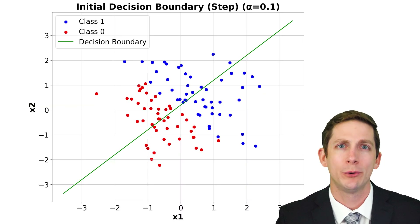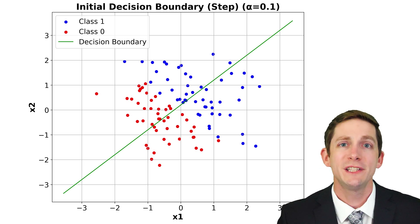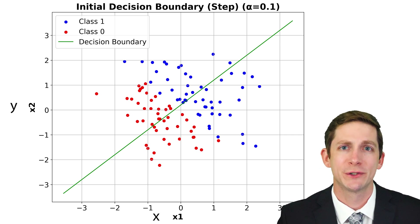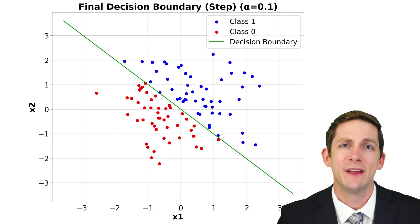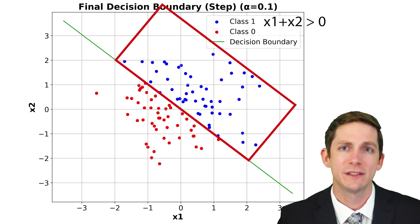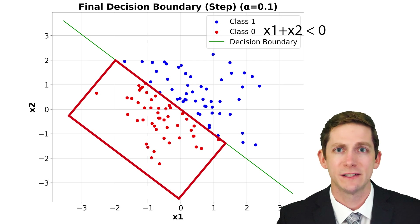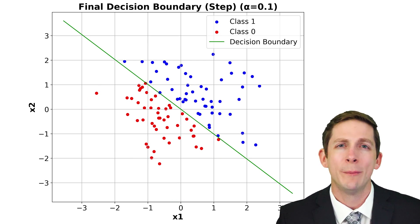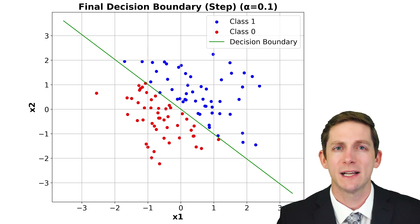For this first example, we have 100 data points that are plotted on an x1, x2 coordinate plane. This is basically the xy coordinate plane we all know from grade school, but we are calling x, x1, and y, x2. A single perceptron can learn a linear decision boundary that can separate two classes. The two classes in this case were made by saying if x1 plus x2 is greater than 0, then it is class 1; if x1 plus x2 is less than 0, then it is class 0. We can see that the data is linearly separable, but how do we train the perceptron so that the decision boundary properly separates the two classes?